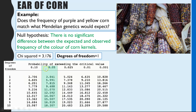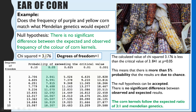We then need to find the critical value by looking at the one degree of freedom row. We always look at 0.05 — that's a 5% probability that the difference is due to chance — for our p-value, which means you can be 95% confident that any difference is significant. The critical value we are using is 3.841, and we have to compare that to our chi-squared value of 3.176.